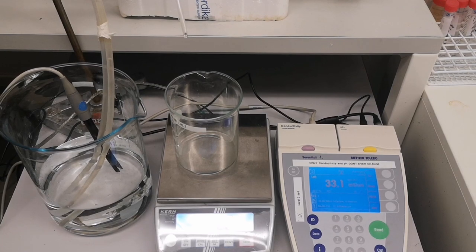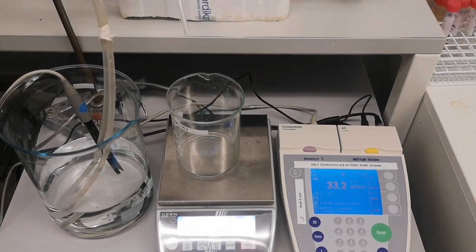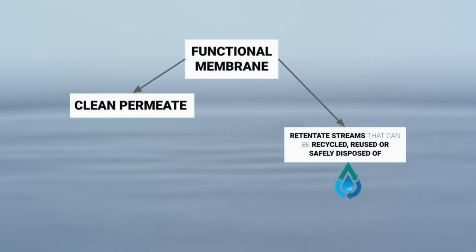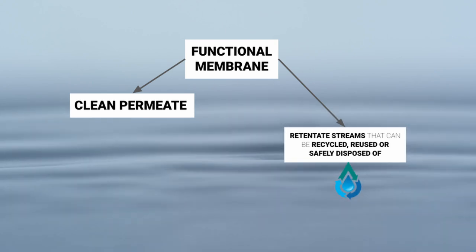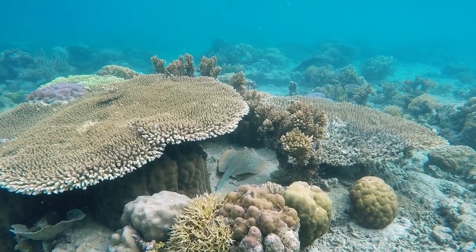The thermocatalytic membrane can therefore degrade the pollutant during filtration, resulting in clean permeate and retentate streams that can be both recycled, reused, or safely disposed of.